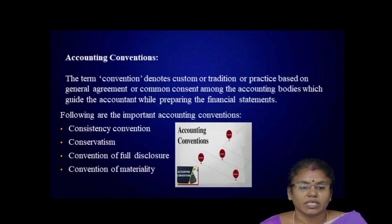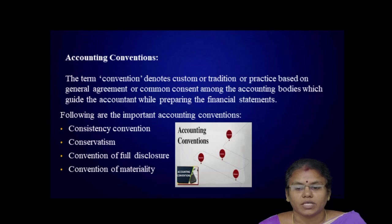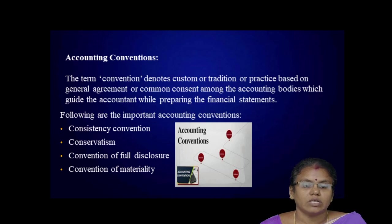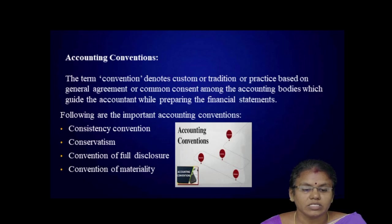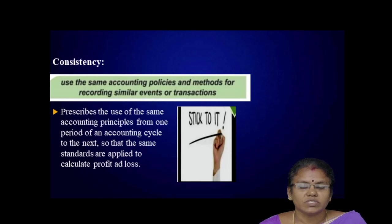The second principle covers accounting conventions. The term conventions denotes customs, traditions, or practices based on general agreement among accounting parties, which guide the accountant while preparing financial statements. The important accounting conventions are: consistency, conservatism, full disclosure, and materiality.